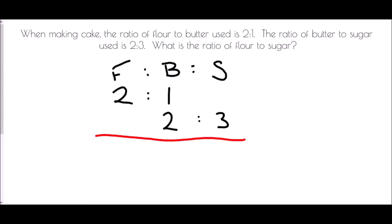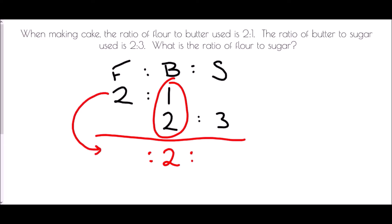What we want to do is combine them so that they are a single ratio. The way to do that is to find the overlap — wherever the overlap is, we want to find a common multiple of those two numbers. In this case, a common multiple of 1 and 2. It's a straightforward one: it is a multiple of 2. In the first ratio, what have I done in order to turn the 1 into 2?